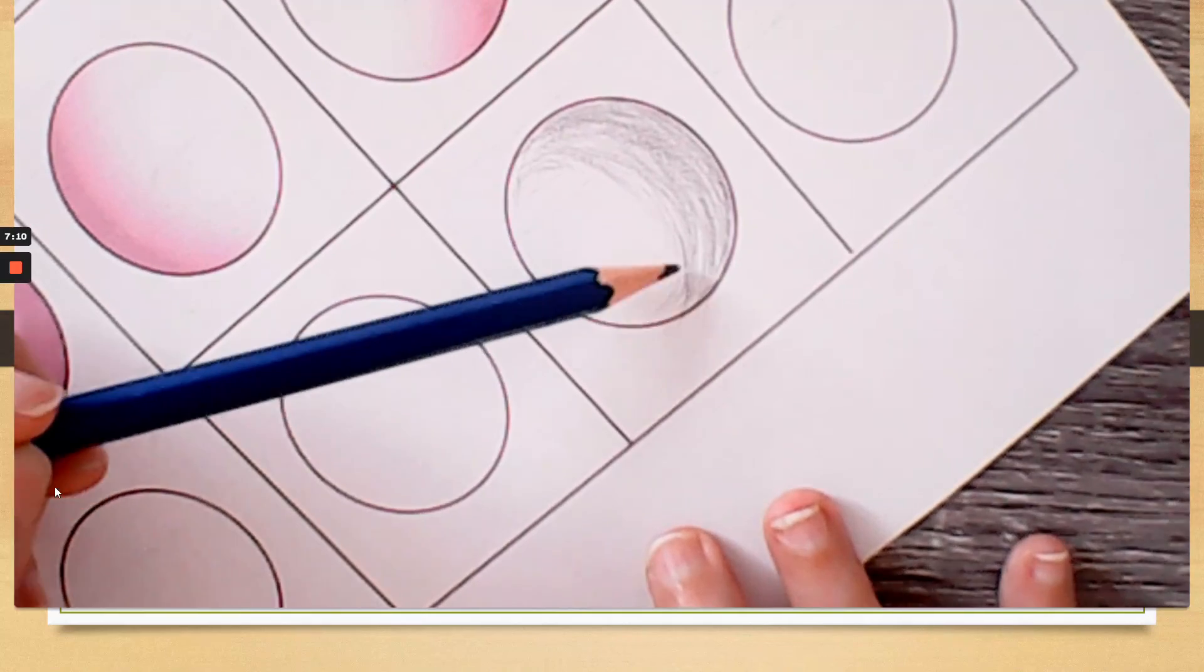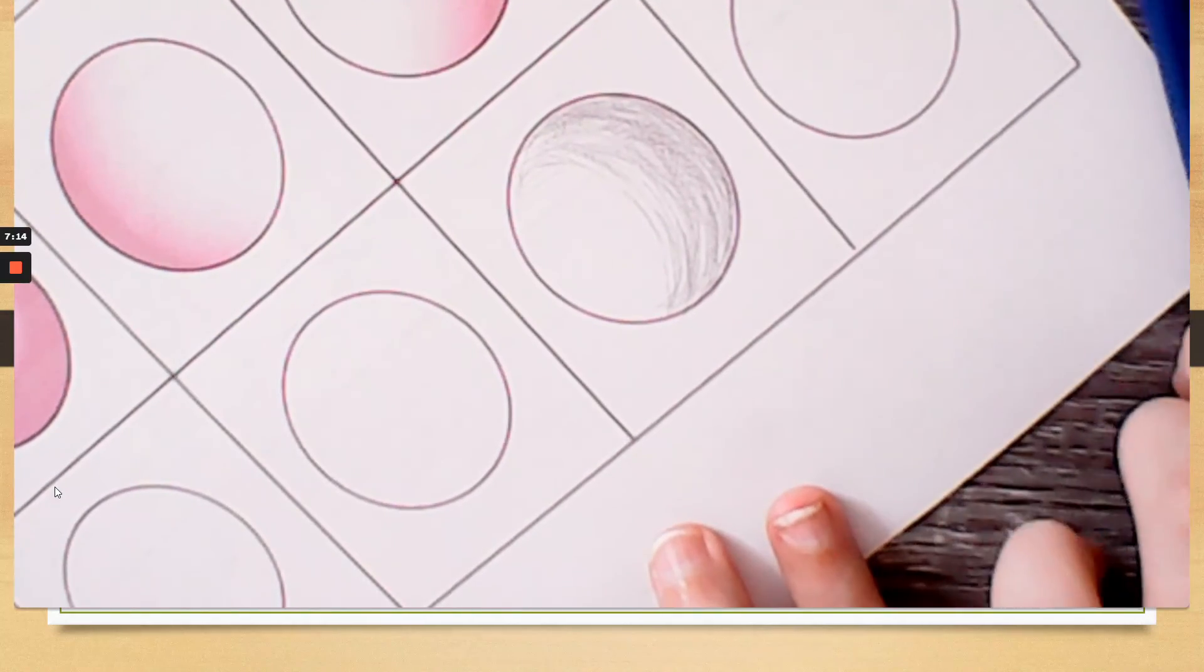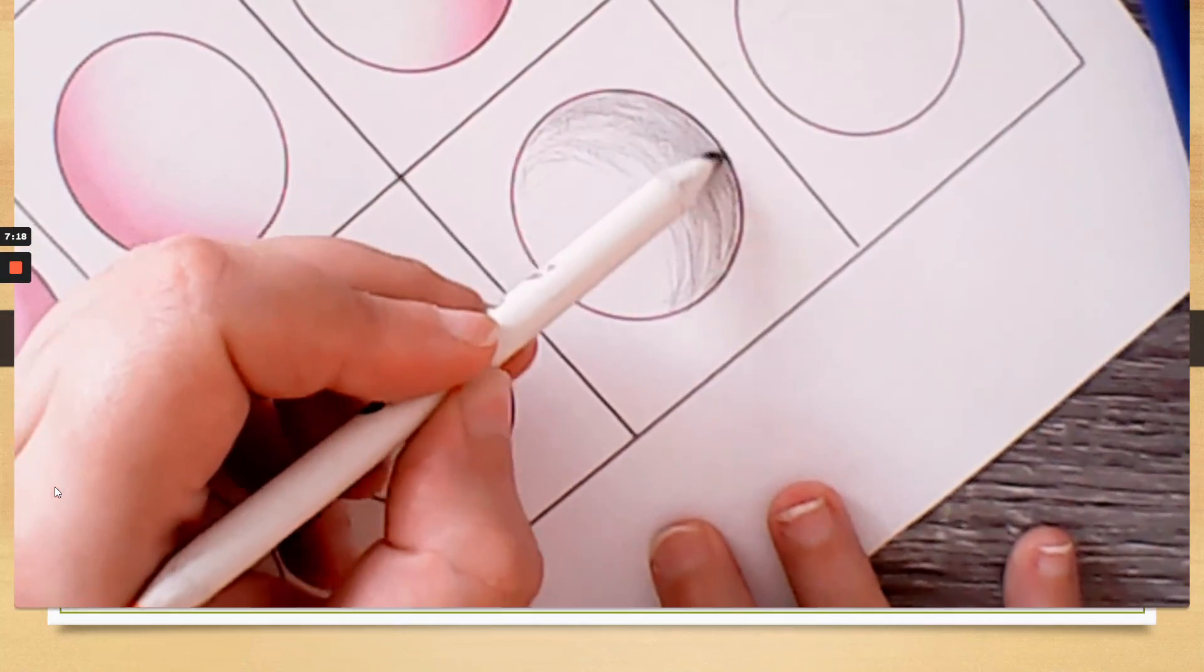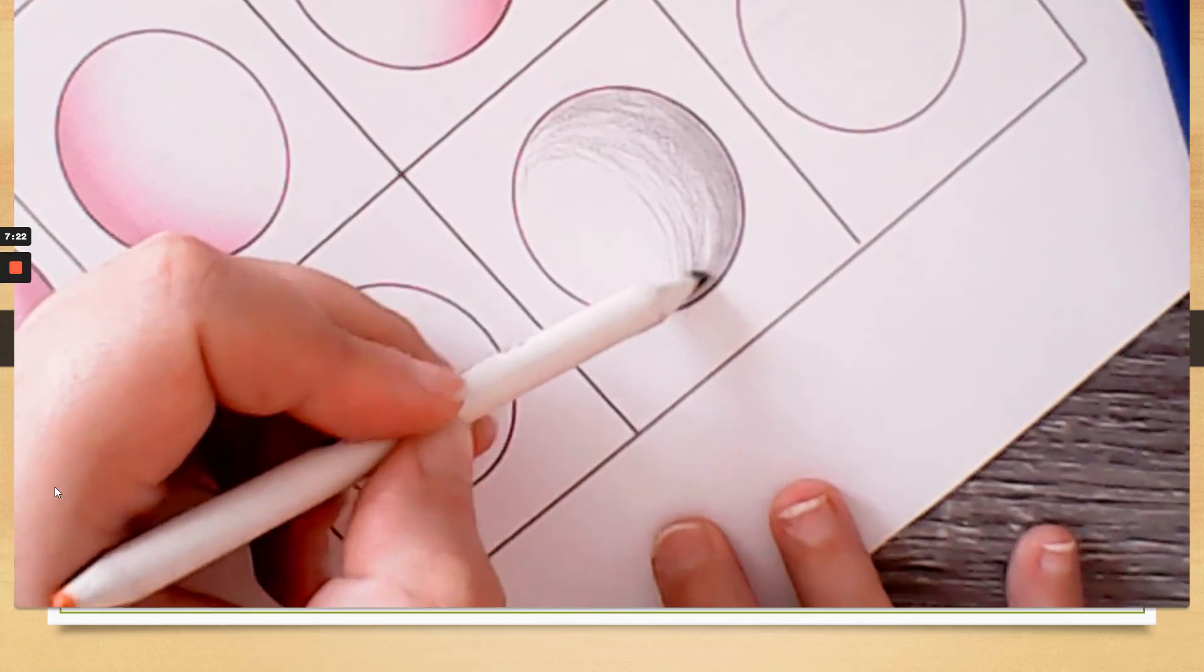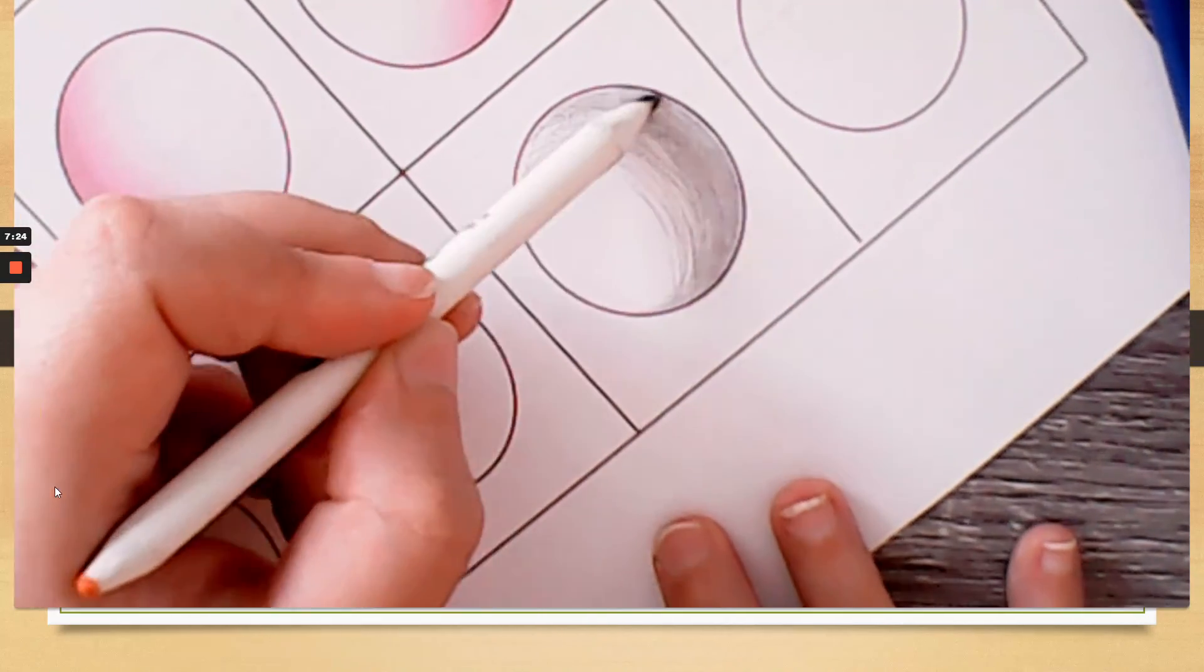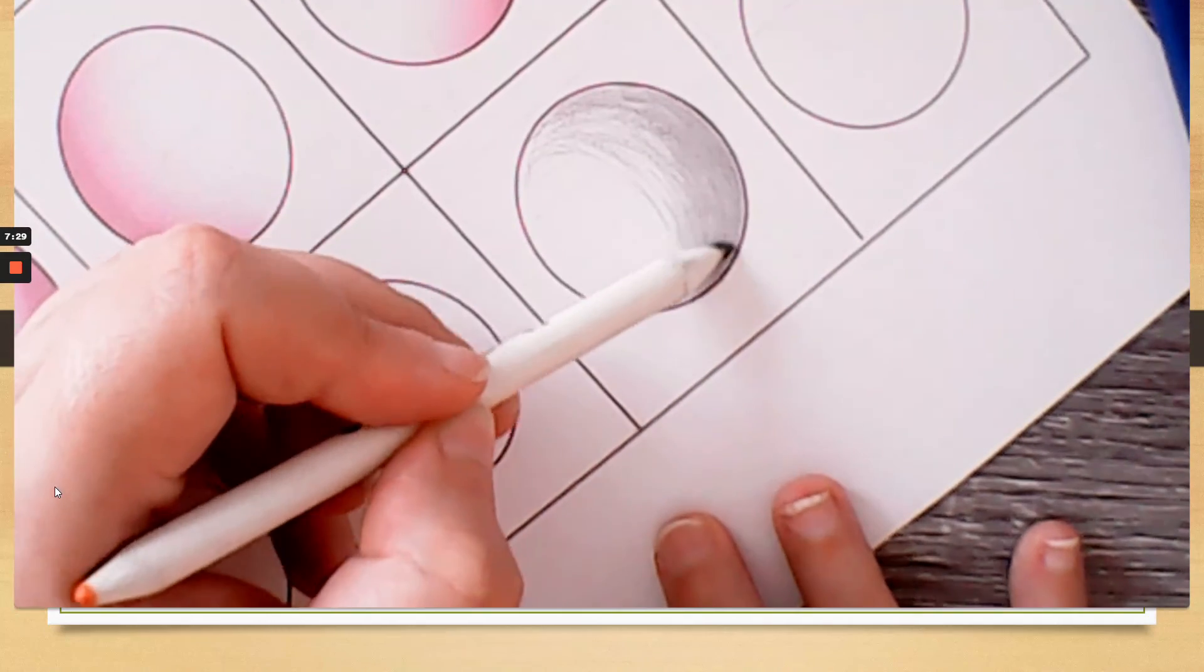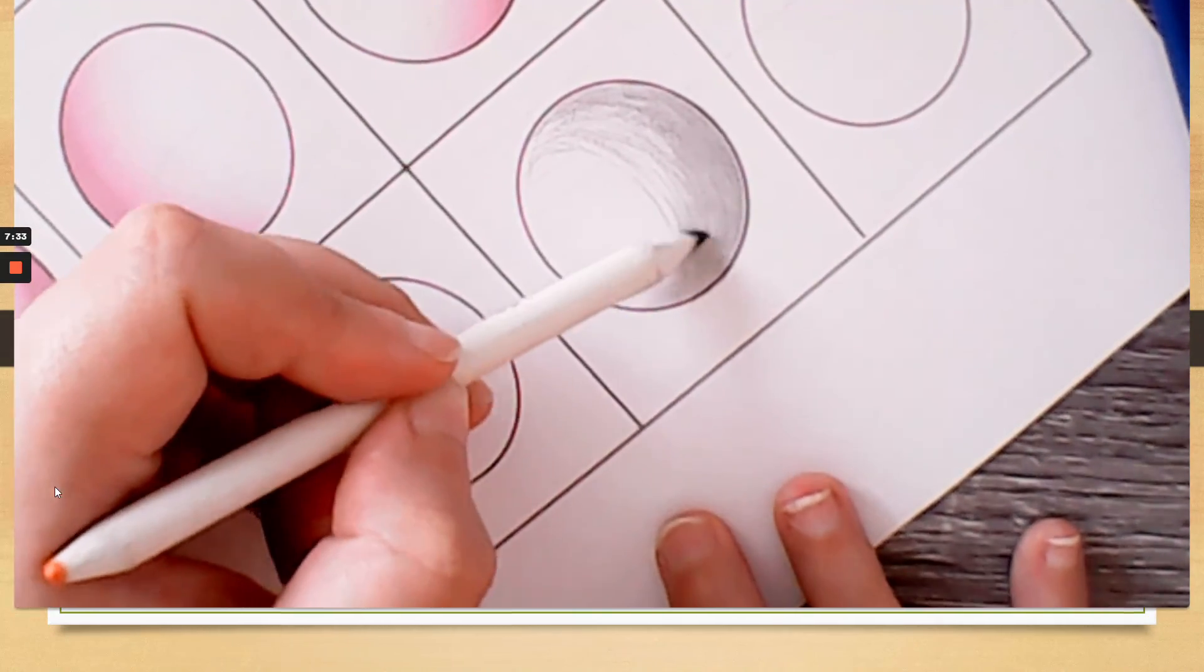And you can see the little gaps. I'm not worried about that at the moment, because I'm going to get my blending tool, and I'm going to gently blend out those marks. And I start off following the outline, and then as I come away from the outline, I tend to go into circles.